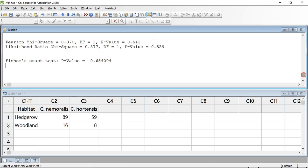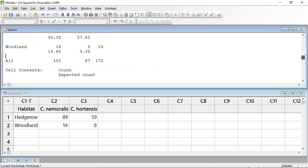If we scroll up in the window, we can see that we also have the expected values given under the counts in a summary table.